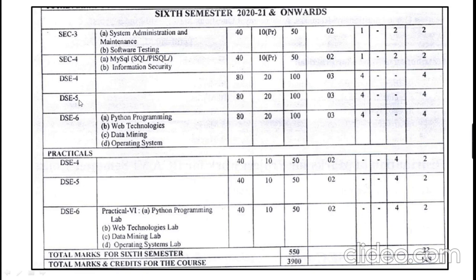DSC-4 and DSC-5 are your physics and mathematics papers, and DSC-6 is your computer paper. In DSC-6, you will have four options: Python Programming, Web Technology, Data Mining, and Operating System. Among these four, you may choose any one for 100 marks — external exams will be conducted for 80 marks, and 20 marks are given as internal assessment.